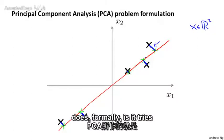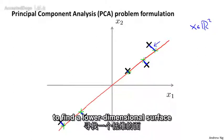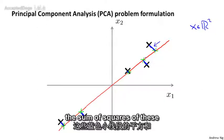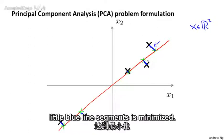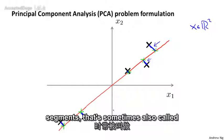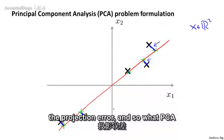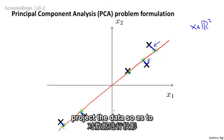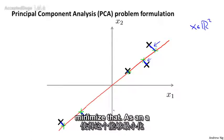What PCA does formally is it tries to find a lower dimensional surface — really a line in this case — onto which to project the data, so that the sum of squares of these little blue line segments is minimized. The length of those blue line segments is sometimes also called the projection error. So PCA tries to find the surface onto which to project the data so as to minimize that.